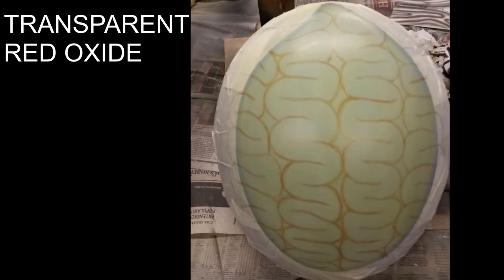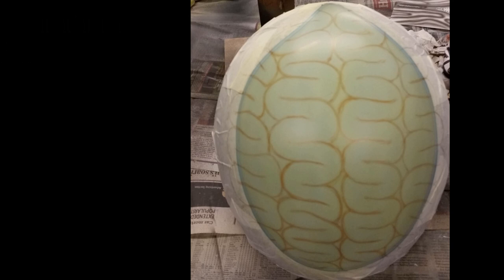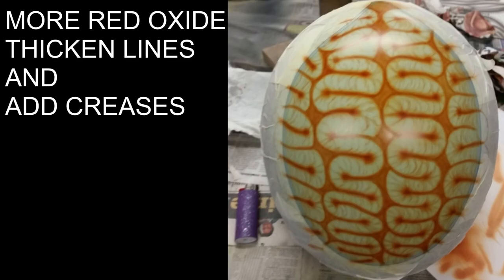I'm using Createx paints throughout this whole project. So I started off with yellow Wicked Detail by Createx. Then I just started sketching out my design with transparent red oxide. Red oxide is going to be the key to this design. I just keep adding more red oxide layer by layer.